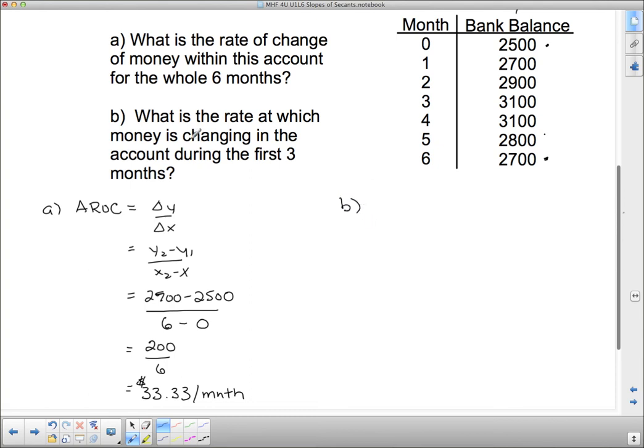So for part B, it says, what is the rate at which money is changing in the account during the first three months? Well, now the first three months, I need this block here. So I need to figure out what my y₂ minus y₁ is there. So AROC equals the change in y over the change in x. And if we take a look at this, the change in y, it's gone up $600. You can do the y₂ minus y₁ if you want, but with this one, it's kind of easy just to look at it and see what the increase is. And over here, it's obviously an increase of 3. So in the first three months, it has increased by $200 per month.